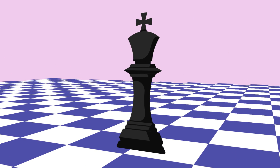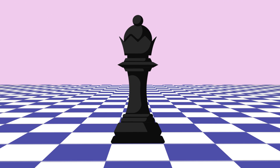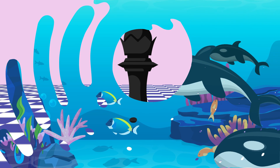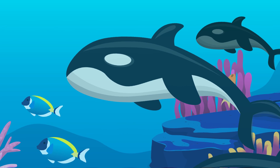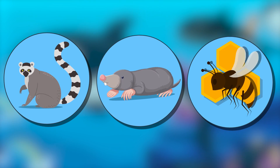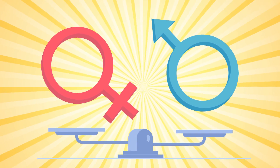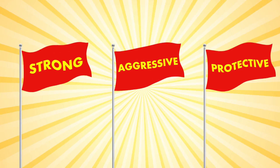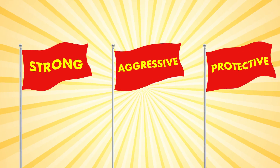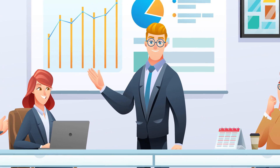Though the largest males typically occupy alpha roles, there are many examples in the animal kingdom of groups led by dominant females. Pods of orcas, or killer whales, are usually matriarchal, which means they are led by an alpha female. Other matriarchal species include ring-tailed lemurs, mole rats, and honeybees. Whether male or female, alphas stand at the top of most dominance hierarchies. They are traditionally strong, aggressive, and protective of their social groups. As the highest-ranking member, an alpha's job is to keep their social group alive and thriving.